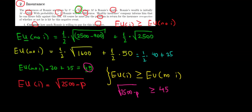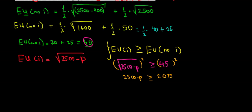We have a square root on the left side, so let's raise both sides to the power of two: 2,500 minus the premium must be at least 45² = 2,025. Rearranging, 2,500 − 2,025 = 475 must be greater than or equal to the premium. So if the premium is at most 475 euros, we're willing to pay for insurance. If it's more than 475 euros, the expected utility from taking the risk is higher and insurance isn't worth it.